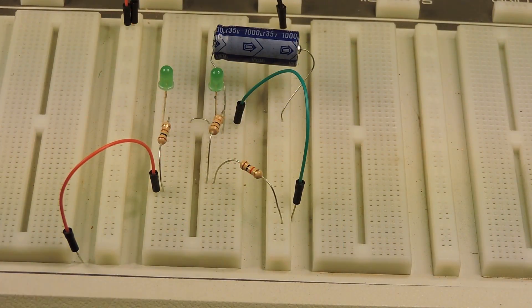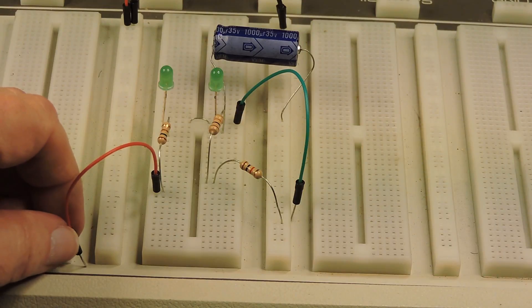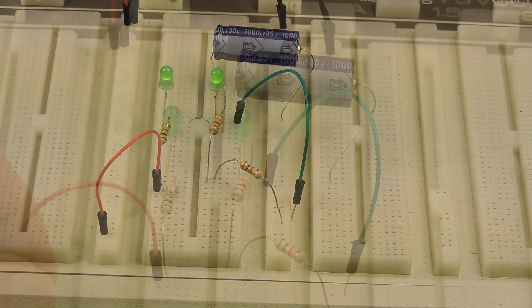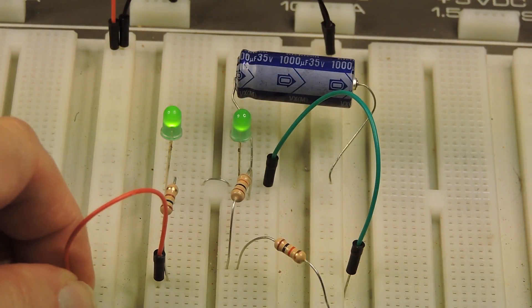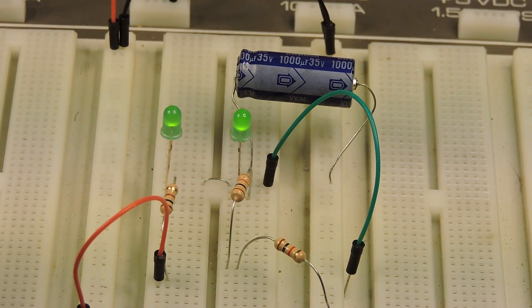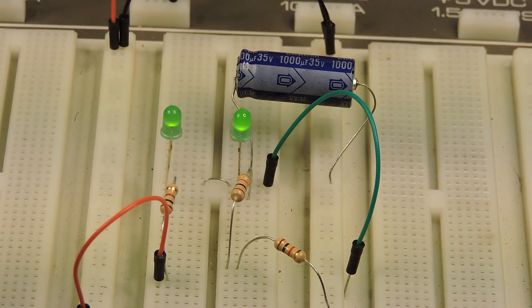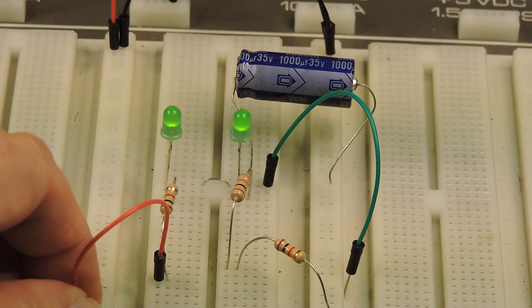Now when I apply 12 volts to this circuit, you'll notice that the current diode on the left gets very bright for a while and then reduces in brightness, and the voltage diode on the right comes up gradually.